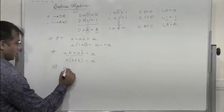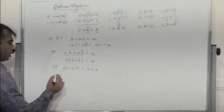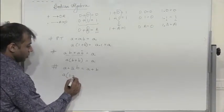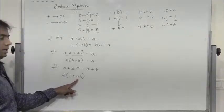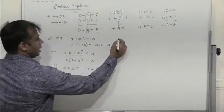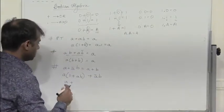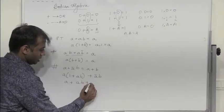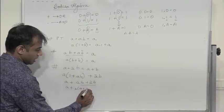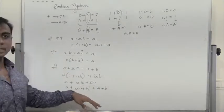A very important one: A plus A bar B is equal to A plus B. I need to eliminate A bar. So I multiply with 1 — since 1 plus AB gives 1 — expanding: A plus A bar B becomes A plus AB plus A bar B. Taking B common from the last two: A plus B(A plus A bar). Since A plus A bar is 1, we get A plus B.